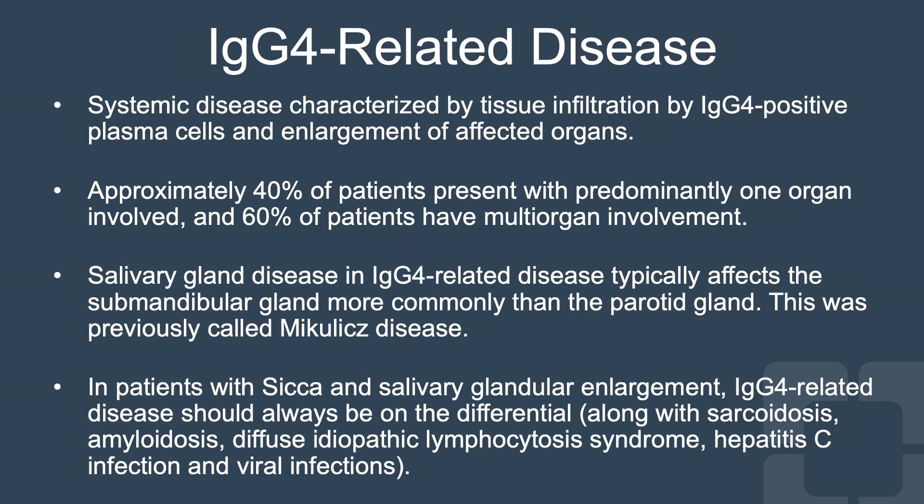In summary, IgG4-related disease is a systemic disease characterized by tissue infiltration by IgG4-positive plasma cells and enlargement of affected organs. Approximately 40% of patients present with predominantly one organ involved, and 60% of patients have multi-organ involvement. Salivary gland disease in IgG4-related disease typically affects the submandibular glands more commonly than the parotid glands.